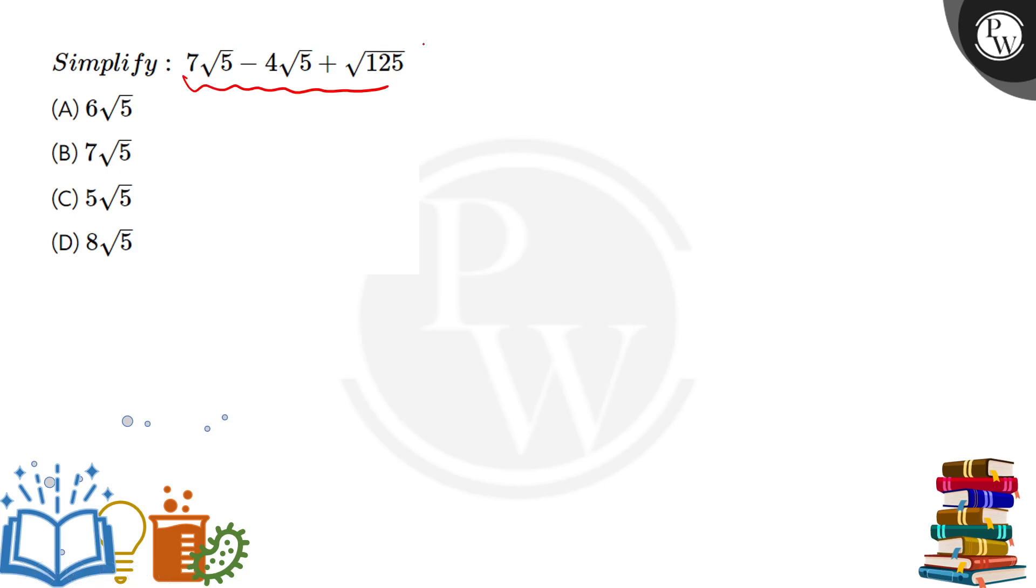For simplifying this, all the terms need to be in the same form. Like 7 root 5, 4 root 5. We need to simplify this under root 125. If we do the prime factorization of 125, that will give us 5 from 25, again 5 from 5 and 1. So under root 125 can be written as 5 root 5.